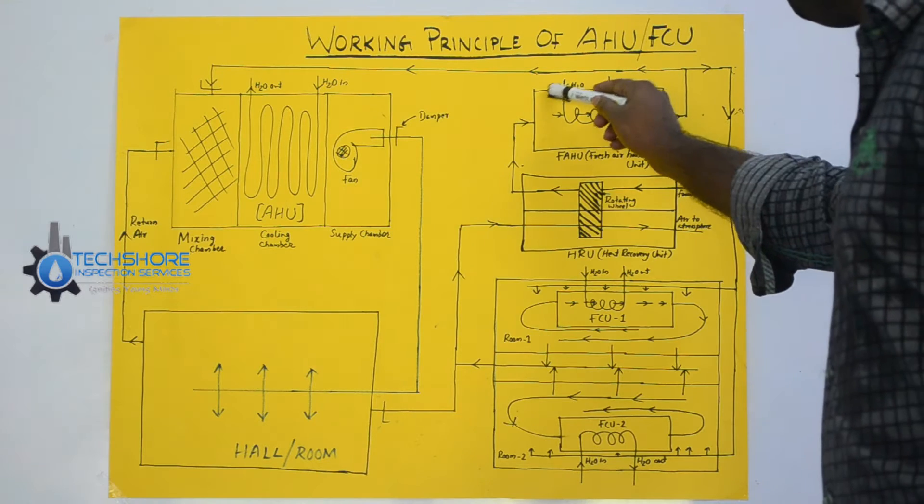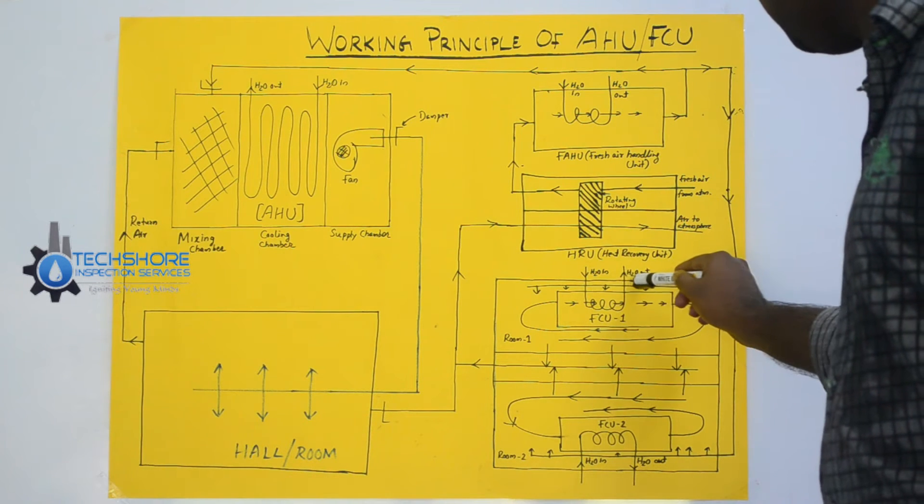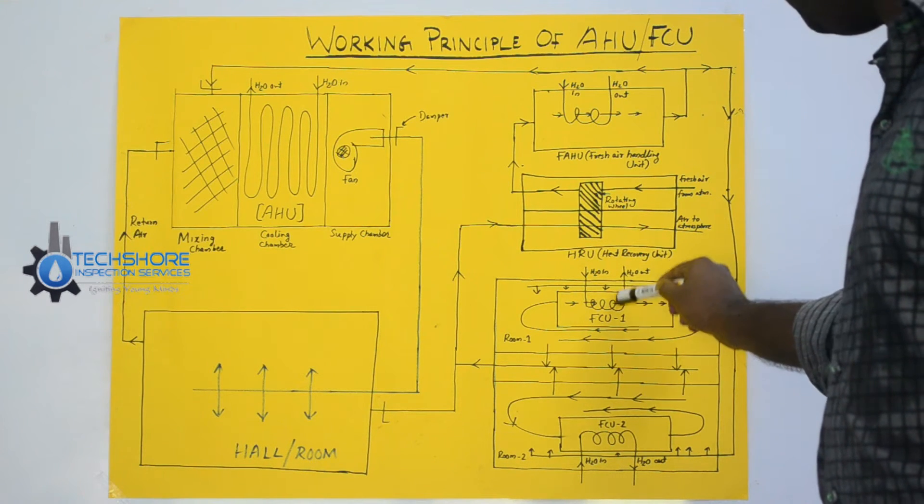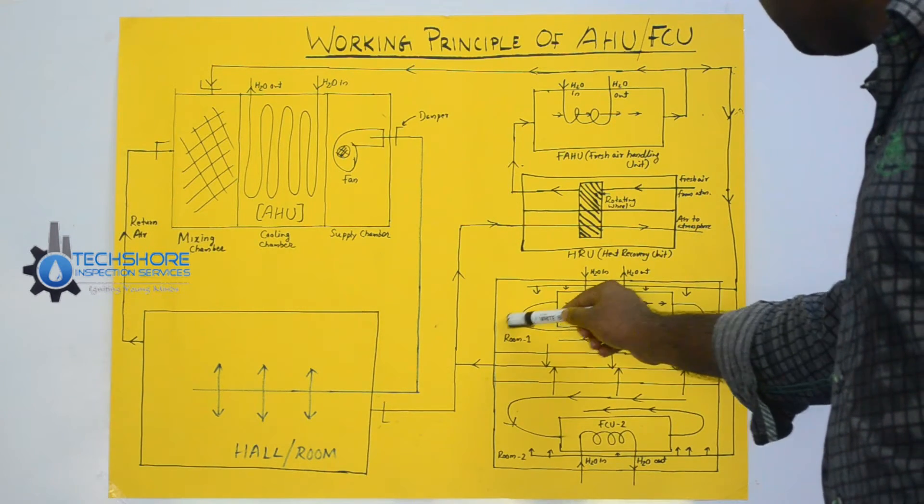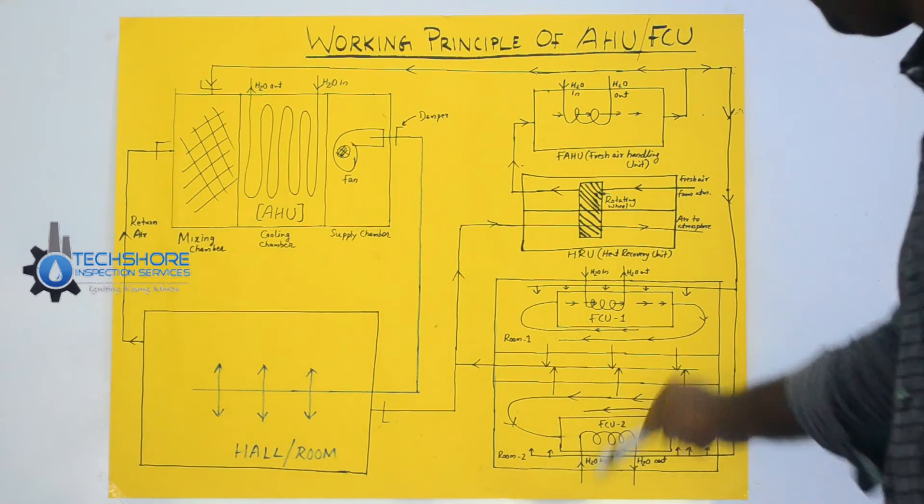Same way, it is coming from the chiller, cold water coming here and cold water out. Same way, this FCU is there. Other rooms have FCU.